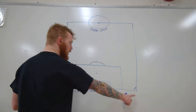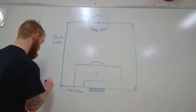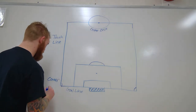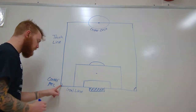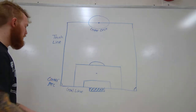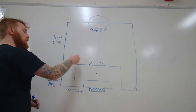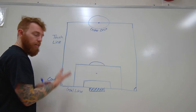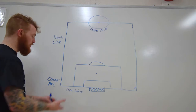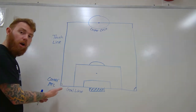Then you have these two arcs here in the corners. These are called corner arcs. On a corner kick, the ball is placed there. You get a corner kick when a defensive player on their side of the field kicks the ball out past the goal line. That's how the ball goes to the corner — that's how a corner kick happens and it goes to the corner arc.